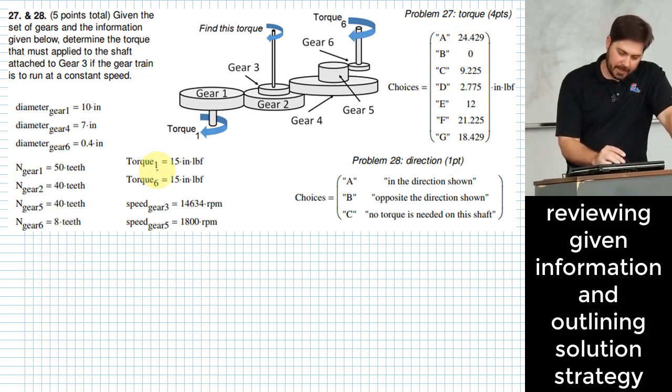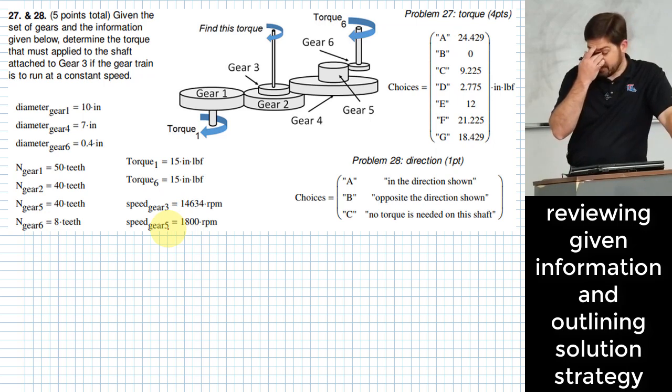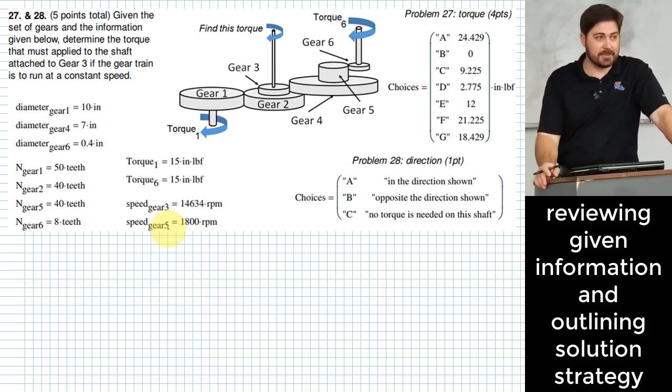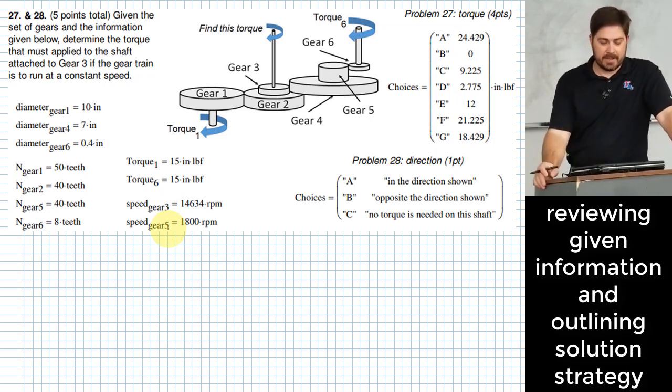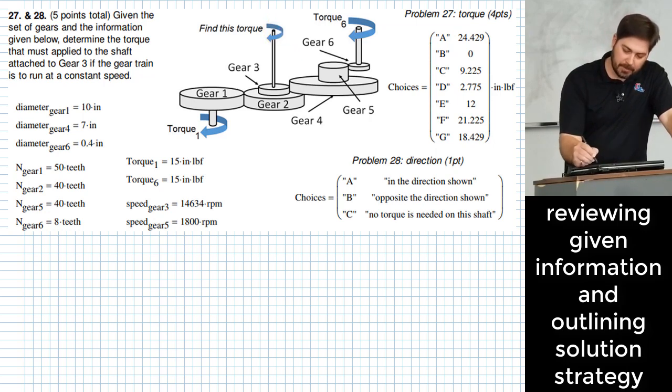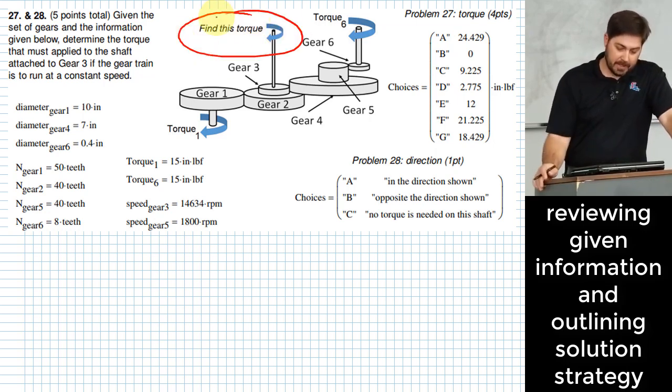For input shafts one and six, we're given those input torques. And then we're given the speed of gear three and the speed of gear five. So we have all kinds of different kinds of information that we can bring to bear on this problem. We need to think about all of that to figure out how much torque ultimately we are going to need to apply right here to hold it all in equilibrium.